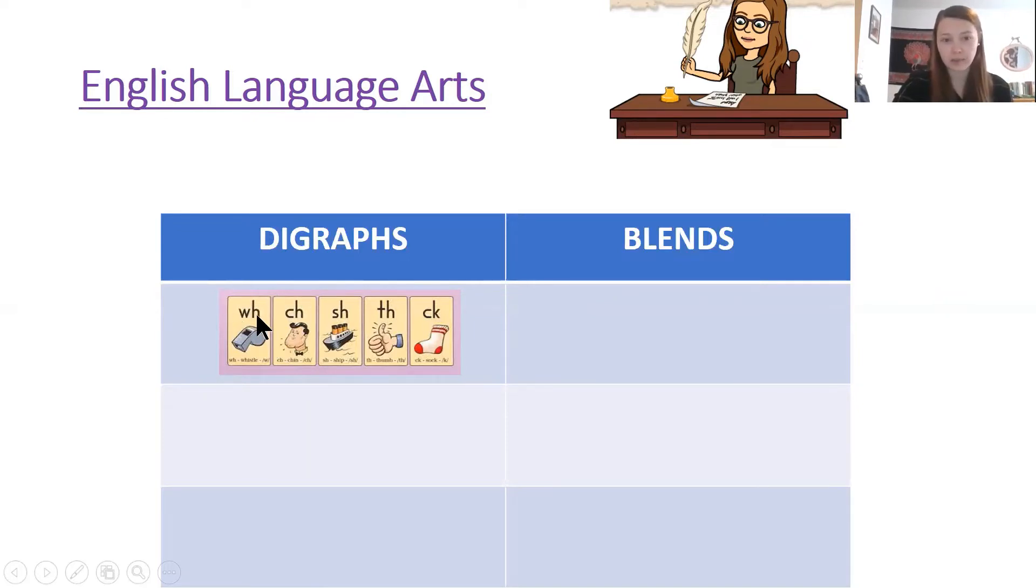We have W-H, whistle, wha. C-H, chin, ch. S-H, ship, sh. T-H, thumb, th. And C-K, sock, k. And remember C-K, we only see at the end of a word.